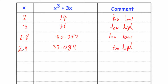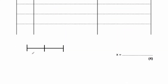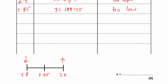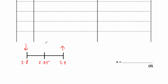Let's try 2.9: that equals 33.089, which is too high. So the answer is in between 2.8 and 2.9. Let's try the checker 2.85: 2.85 cubed plus 3 times 2.85 equals 31.699125, which is too low. So 2.8 is too low, 2.9 is too high, and the checker 2.85 is also too low. Our answer will be between 2.85 and 2.9, so it's closer to 2.9. The answer is 2.9.